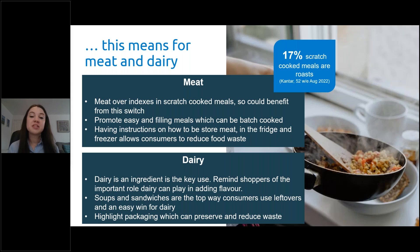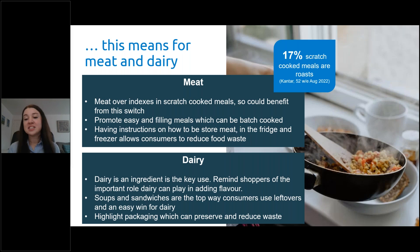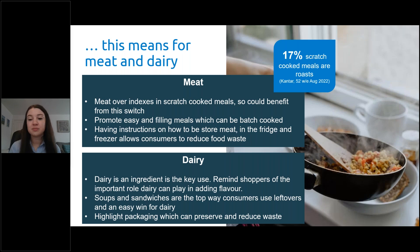For dairy, as these tend not to be the main focus of a dish, it's about reminding shoppers of the great taste of dairy and how easy it can be to add dairy to boost flavour. This is still the main need for consumers. Highlighting where dairy can be the main focus of the meal as well, such as soups or sandwiches, and also with cooking cheeses which we've seen grow in popularity, things like halloumi and paneer. As with meat, reducing food waste is a key need, so highlighting packaging innovations which can keep food fresher for longer.